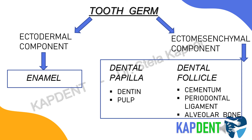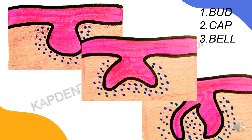Thus, the development of tooth results from the interaction of epithelium derived from the first arch and the ectomesenchymal cells derived from the neural crest cells. Although a continuous process, the development of tooth has been divided into three stages based on the morphology of the enamel organ for descriptive purposes, which I will be discussing in my upcoming video.